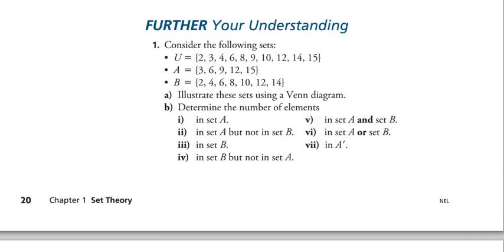Consider the following sets. U (the sample space) contains the numbers 2, 3, 4, 6, 8, 9, 10, 12, 14, 15. We have set A and set B, and we're going to illustrate these sets using a Venn diagram — big enough to write the actual numbers in. Each number goes somewhere: in A, in B, in both, or in neither.